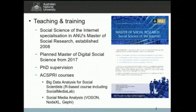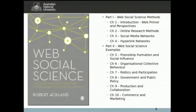I'm also involved in teaching at the ANU. There's a specialization within the Master of Social Research called the Social Science of the Internet, and from 2017 I hope we'll have a new program tentatively titled the Master of Digital Social Science. My book came out in 2013 through Sage Publications — a textbook looking at how social science can inform how the web is changing society and also how the web provides new data sources for advancing social science.